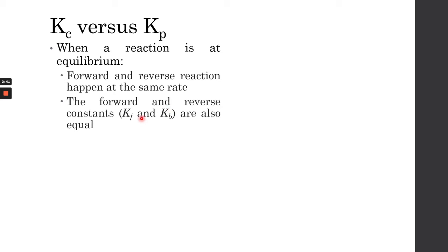Chemical equilibrium also means the forward and reverse rate constants Kf and Kb are equal. If the reaction is not at equilibrium, the forward and reverse reactions are not happening at the same rate — either the forward is faster or the reverse is faster, meaning one side is being favored. There is an equilibrium constant for the forward reaction and one going backward. When the chemical reaction is at equilibrium, Kf and Kb are equal, which makes the reaction rates also equal.